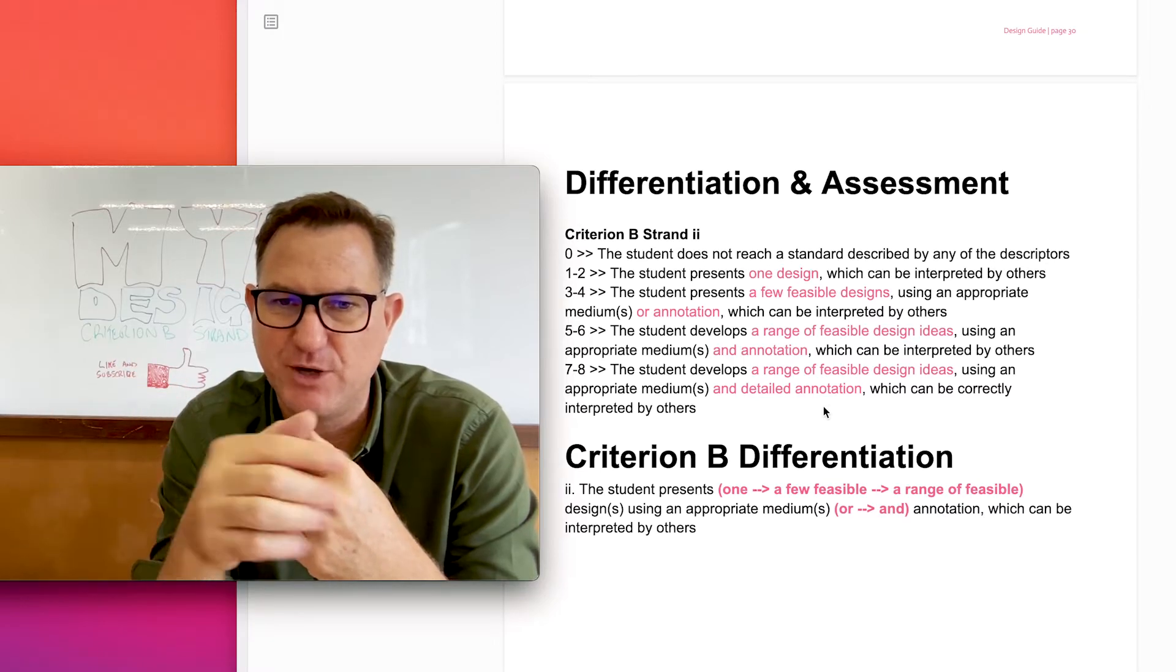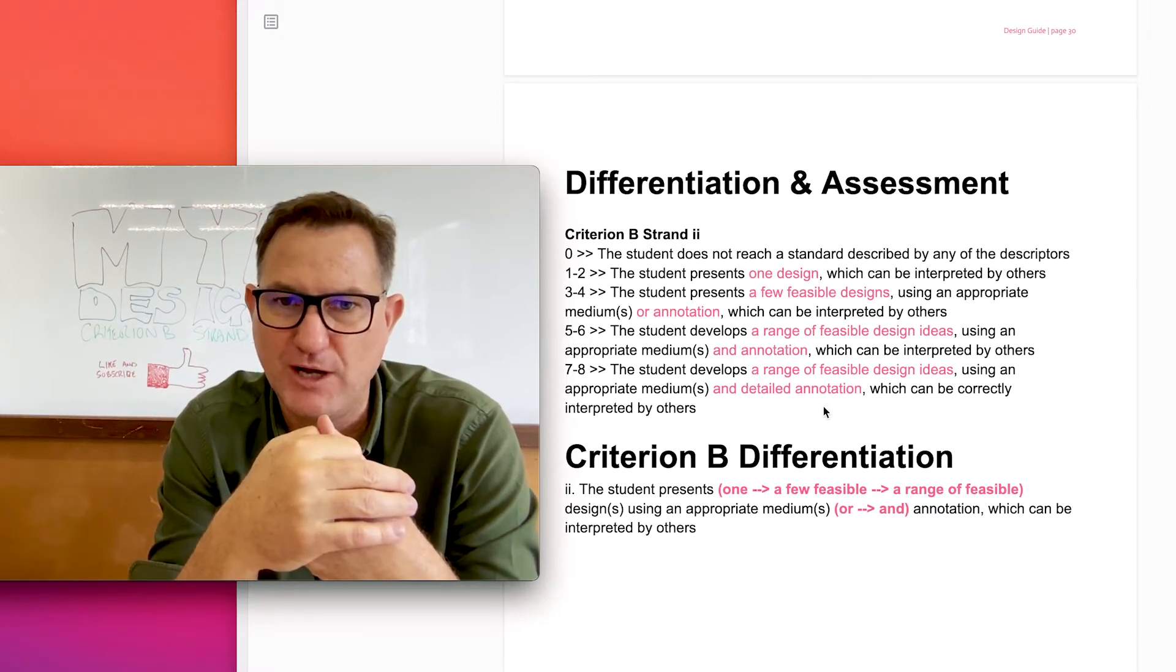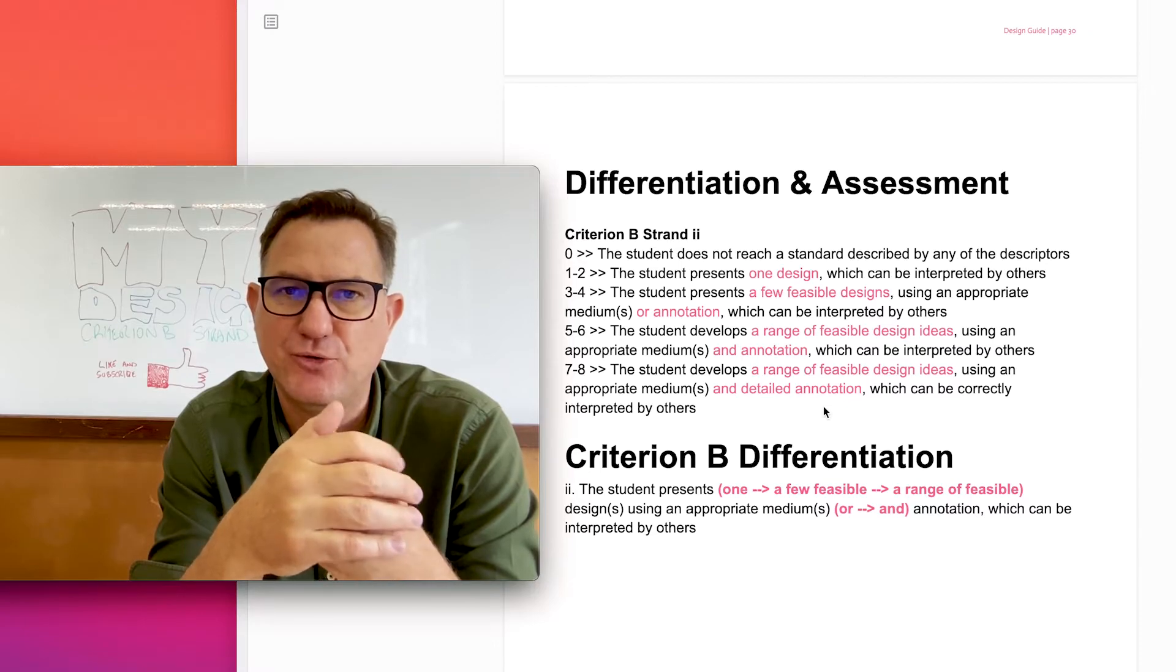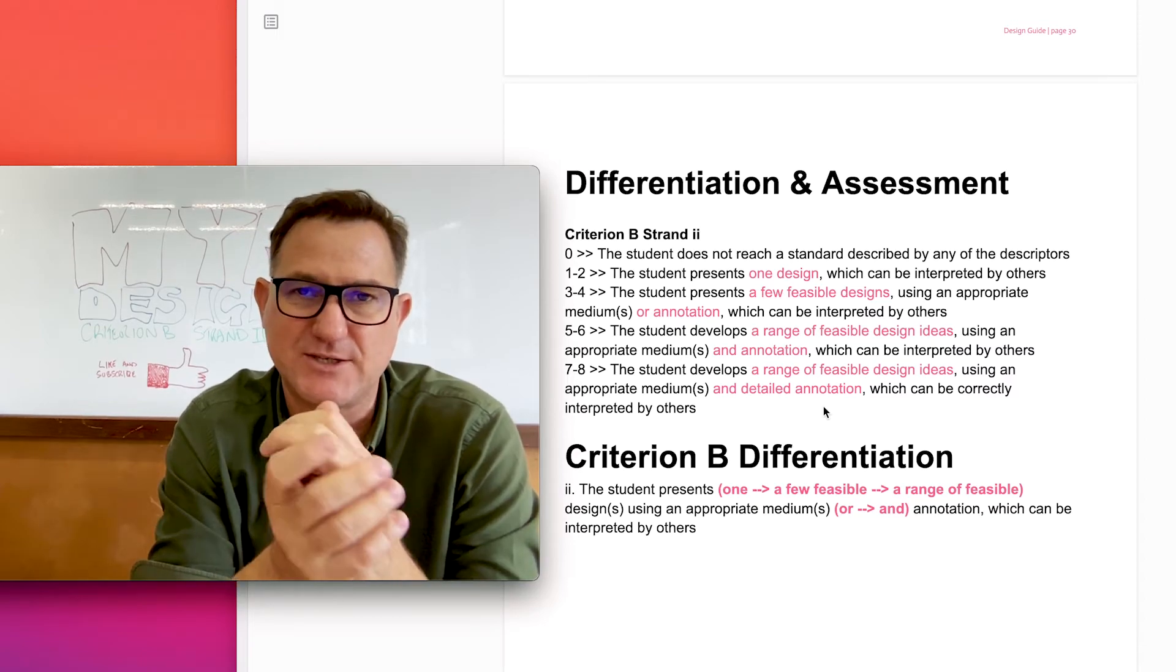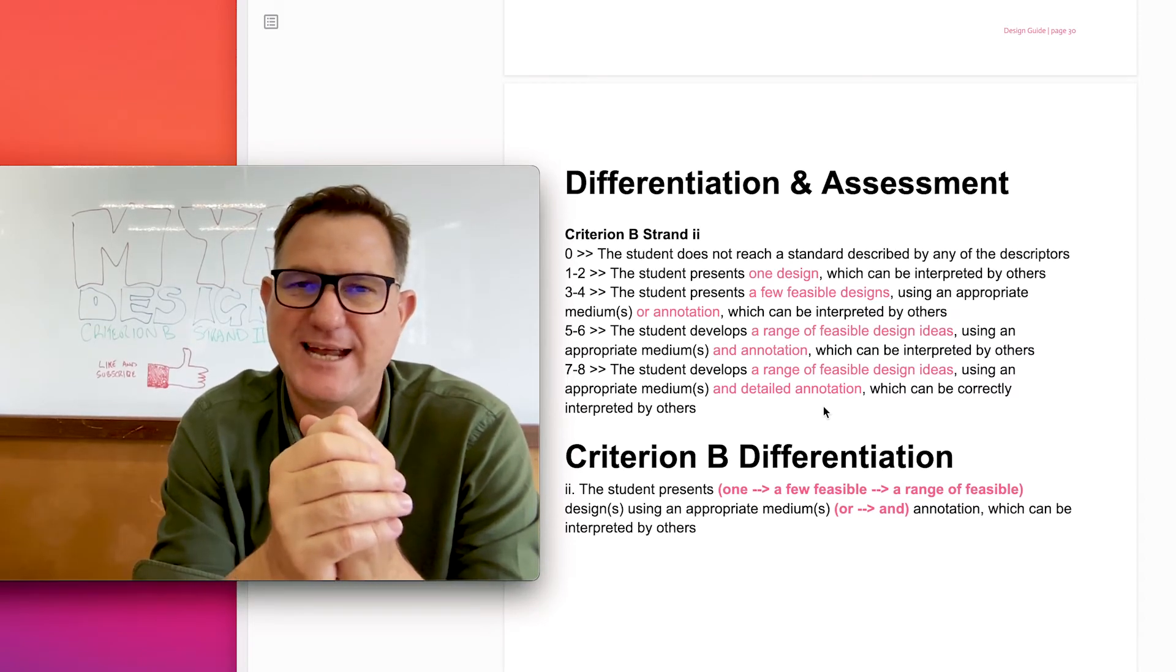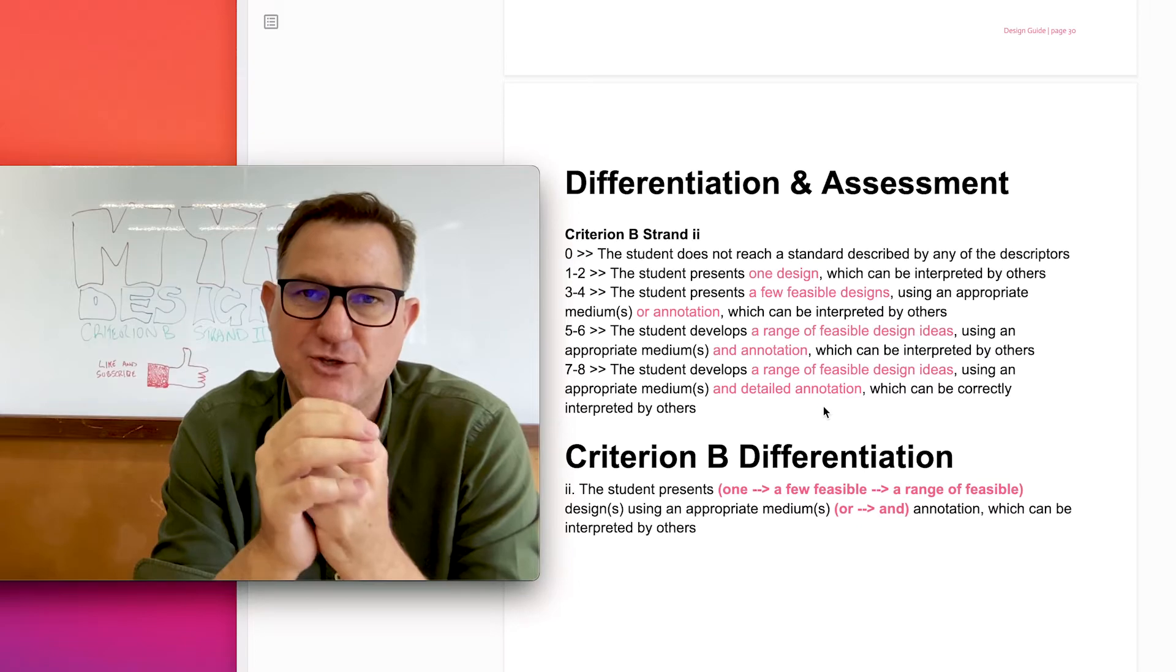You cannot get a score of more than four if you don't have any annotations. If you have basic annotations, you can get top marks of six, but if you have detailed annotation, you can get top marks eight.